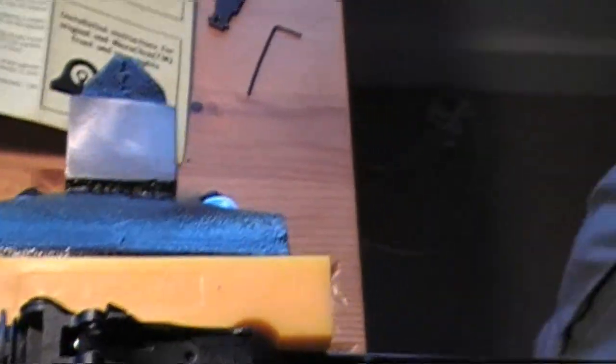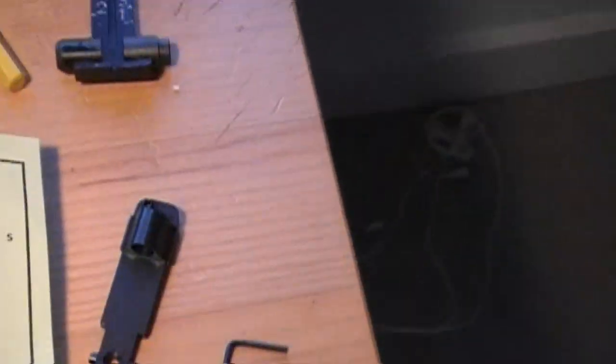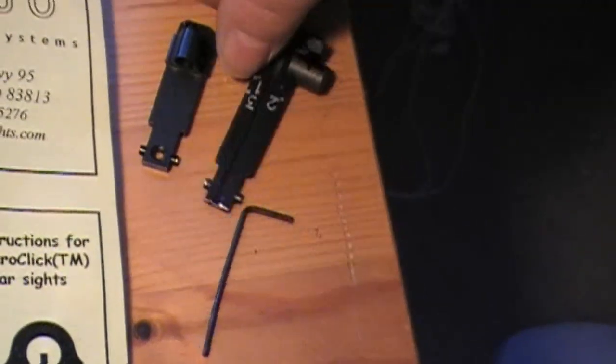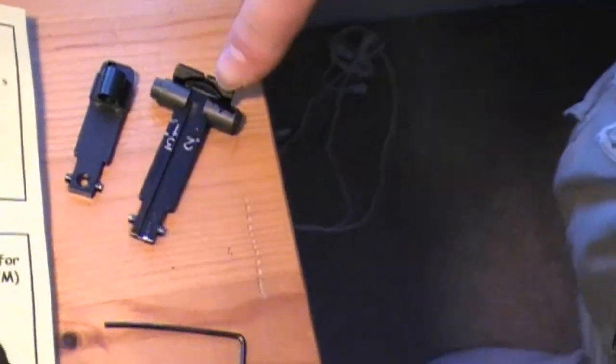All right, so we're going to be replacing it with this - this is the Mojo rear sight. That one was what was on it.